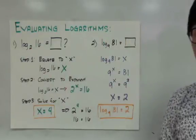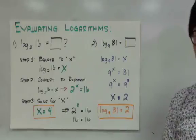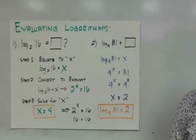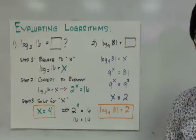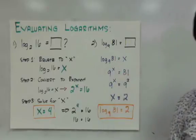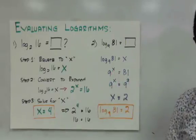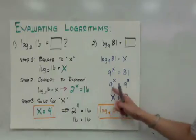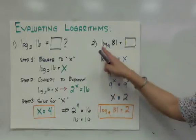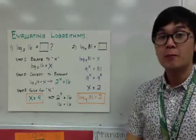For the second example, we have logarithm of 81 base 9, and we need to find its numerical value. Following the three steps: first, equate it to x — logarithm of 81 base 9 is equal to x. Then convert to exponential form: 9 raised to x equals 81. Now think of what power to raise 9 to in order to get 81 — that number is 2, since 9 raised to 2 equals 81. Therefore x equals 2, so logarithm of 81 base 9 equals 2. That is how we evaluate logarithms by converting to exponential form.